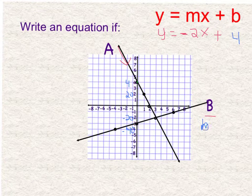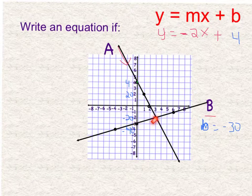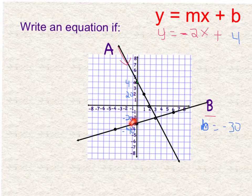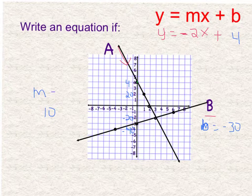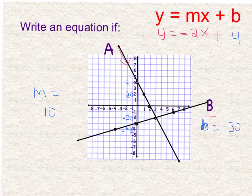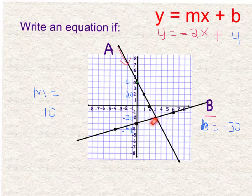So my y-intercept b is negative 30. And then I have to go rise over run. So now to go from point to point, I went from negative 30 to negative 20, so I went up 10. And my x-axis is still numbered by 1, so I went up 10 over 1, 2, 3. So 10 thirds.